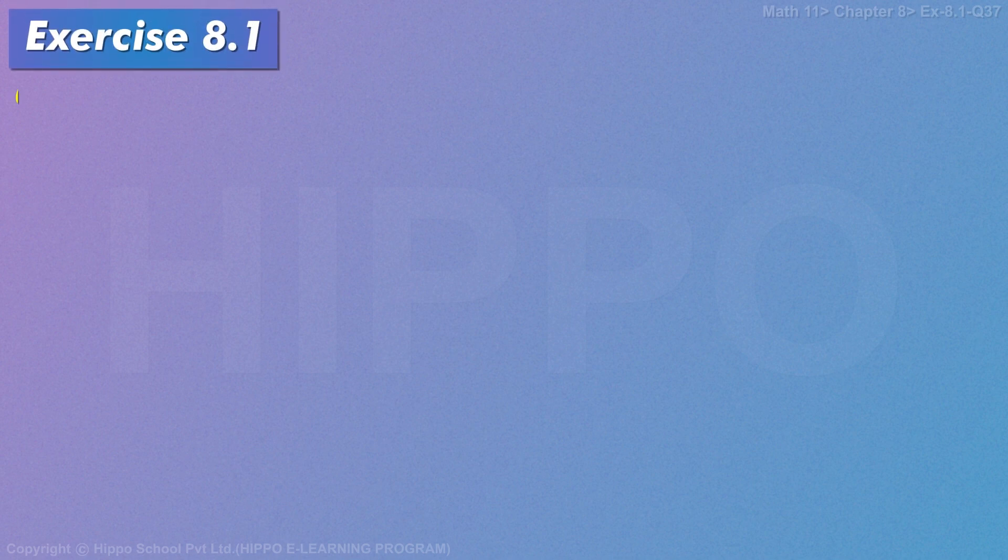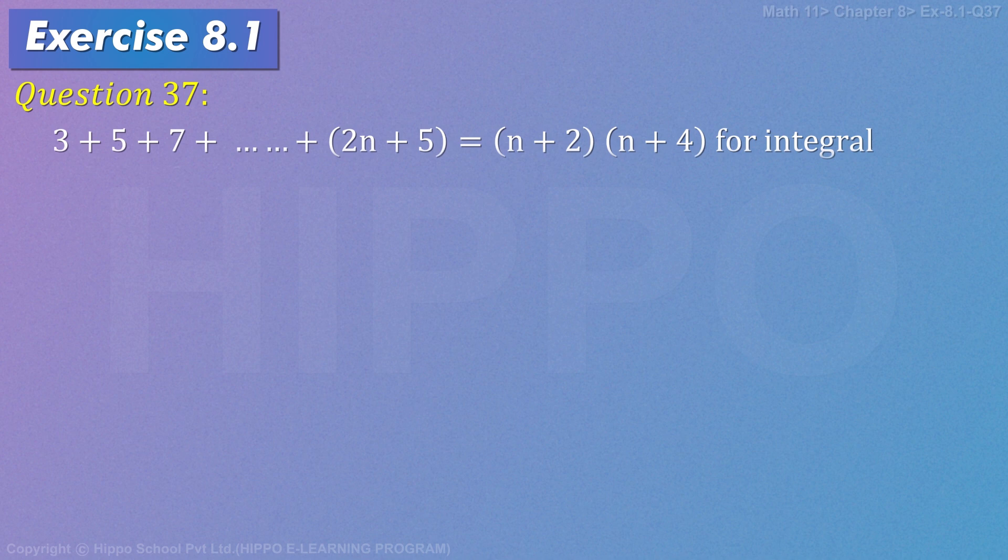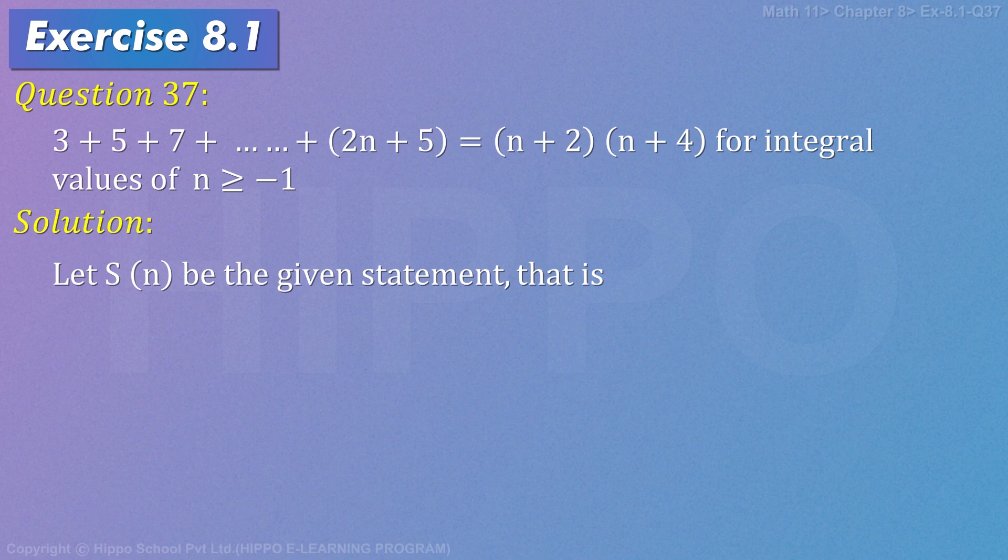Exercise number 8.1, Question number 37. 3 plus 5 plus 7 plus so on 2n plus 5 equals to n plus 2 times n plus 4 for integral values of n greater than equal to minus 1. Solution: Let S of n be the given statement, that is